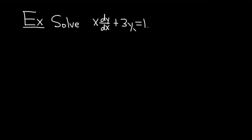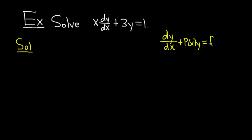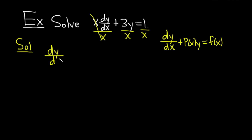Solve x times dy/dx plus 3y equals 1. In this particular example we're going to need to do some work before we compute the integrating factor. Recall the form: dy/dx plus P(x) times y equals f(x). We have an x in front of the dy/dx, so we need to divide everything by x. That gives us dy/dx plus 3 over x times y equals 1 over x. So P(x) is 3 over x.